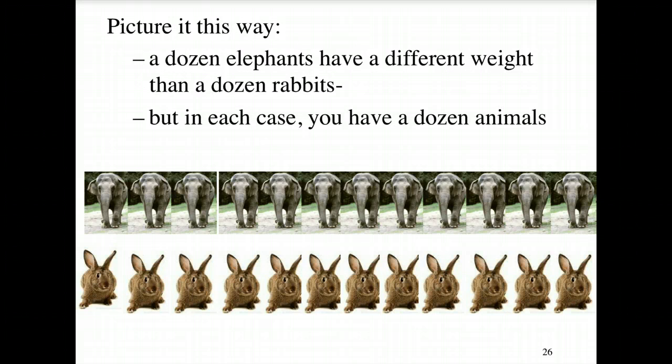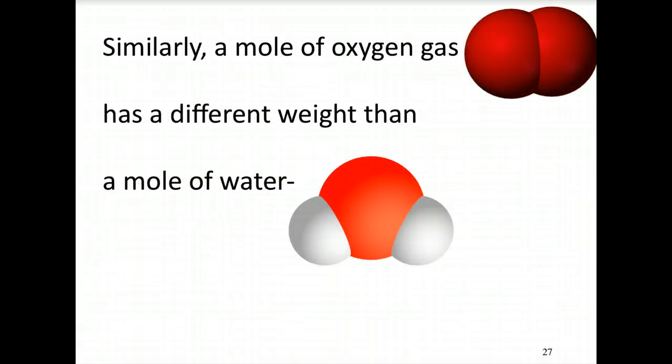We call this the molar mass of a substance. Picture it this way. A dozen elephants have a different weight than a dozen rabbits. But in each case, you still have a dozen animals.